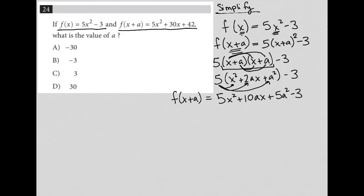But the question tells me that f(x+a) equals this over here. So I'm going to use what I just found: 5x² + 10ax + 5a² - 3 and set it equal to what the question tells me, which is 5x² + 30x + 42.